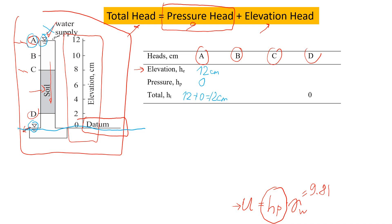Now let's look at point B. Point B is two centimeters below point A. Starting with elevation head, we measure the distance from the datum to point B, which is 10 centimeters. For the pressure head, you can see there is water above point B — that water contributes to the pressure head and that will be two centimeters. So total head is 10 plus 2, which equals 12 centimeters.